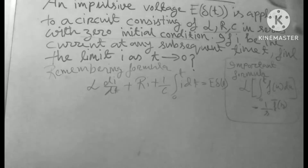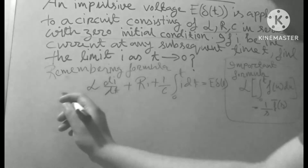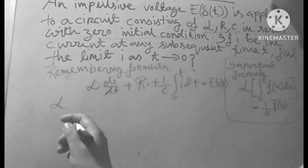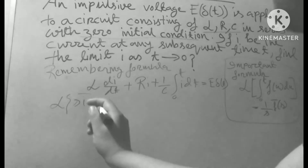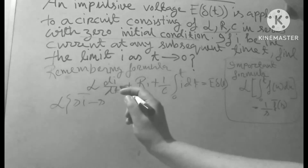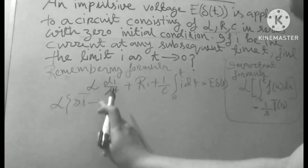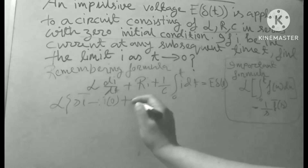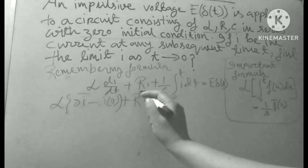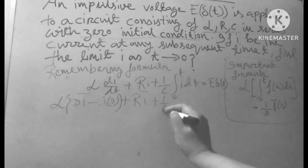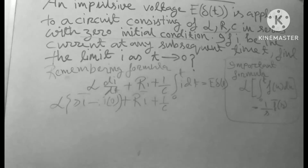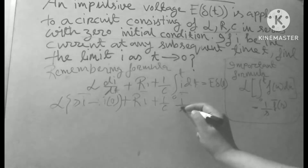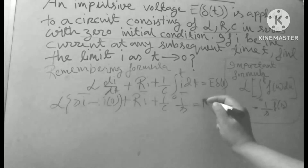Taking Laplace on both sides, we get: L·(S·Ī − I(0)) + R·Ī + (1/C)·(Ī/S) = E. Since initial condition I(0) = 0, this simplifies accordingly.